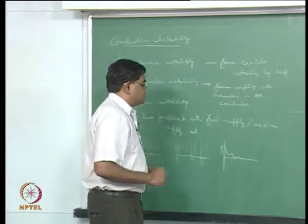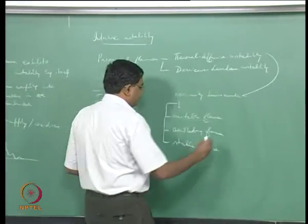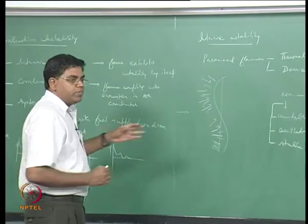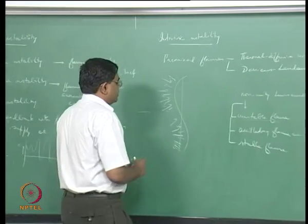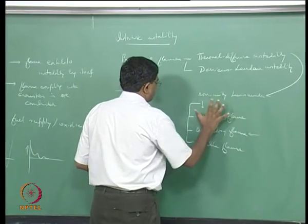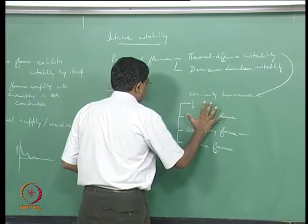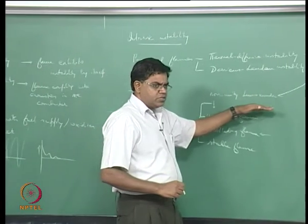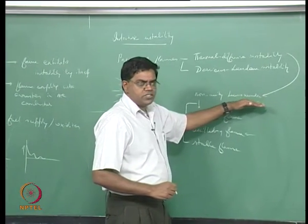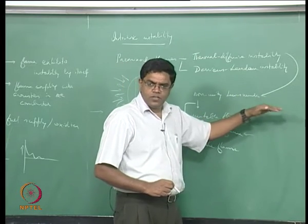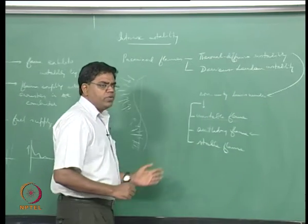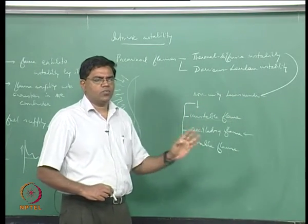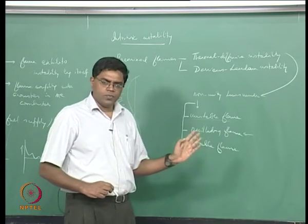For different Lewis numbers you can find whether the flame becomes unstable or stable. The Lewis number is a function of the reactant, as it involves reactant diffusivity. We are usually talking about the non-unity Lewis number of the deficient reactant, because the flame is most sensitive to it.